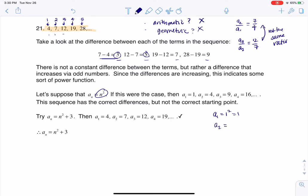a sub 2 would be 2 squared, which would be 4. a sub 3 would be 3 squared, which would be 9.